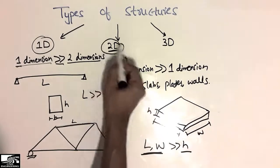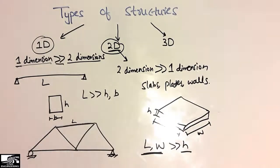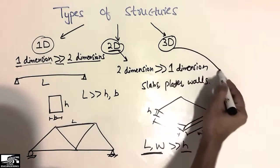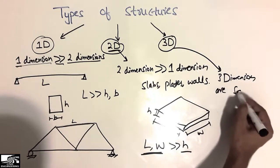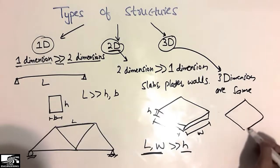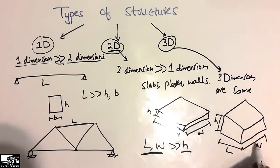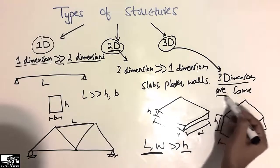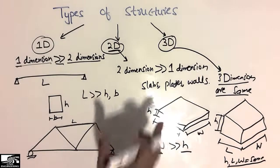So the two dimensions are much larger than the one dimension, and we call this type of structure the two-dimensional structure. Now the third one is the three-dimensional structure — it is the type of structure in which all three dimensions are almost equal. For example, if I consider a footing: the footing width, the footing depth, and the footing height are all the same. When all three dimensions of the structure are the same, we call it a three-dimensional structure.